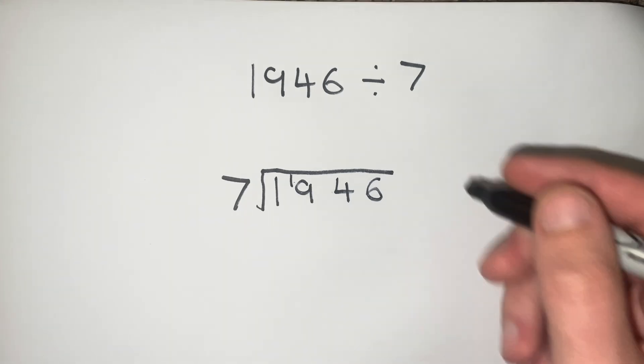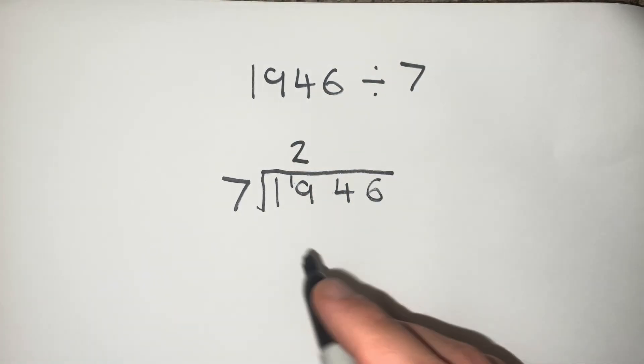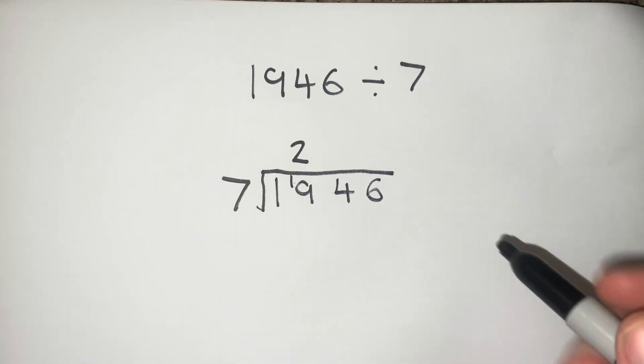How many 7s go into 19? That's going to be 2. And since 2 times 7 is 14, we're going to have 5 more left over.